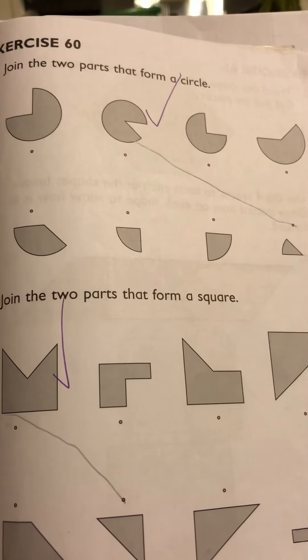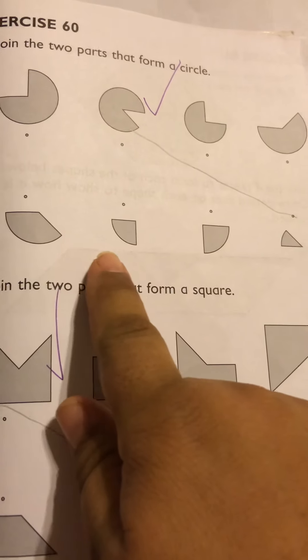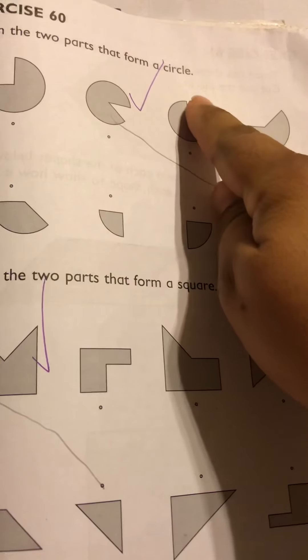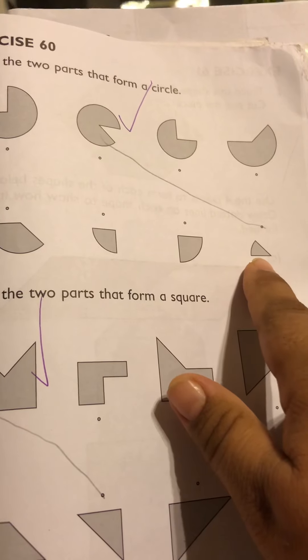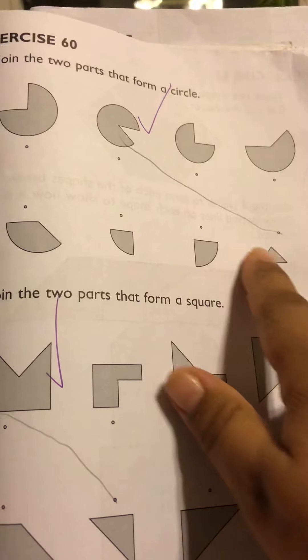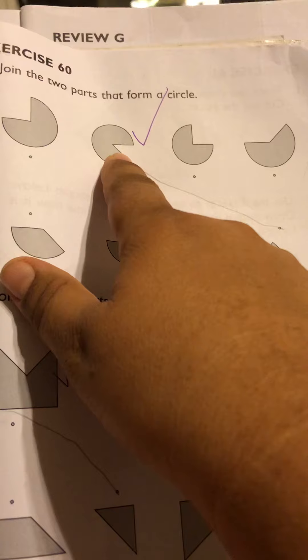The next page is page 60 and all you're doing here is you're going to find the correct shape that matches the missing shape here. So Noah did this one and for this circle there is a small piece missing and he matched the correct piece to the correct spot that's missing in this circle.